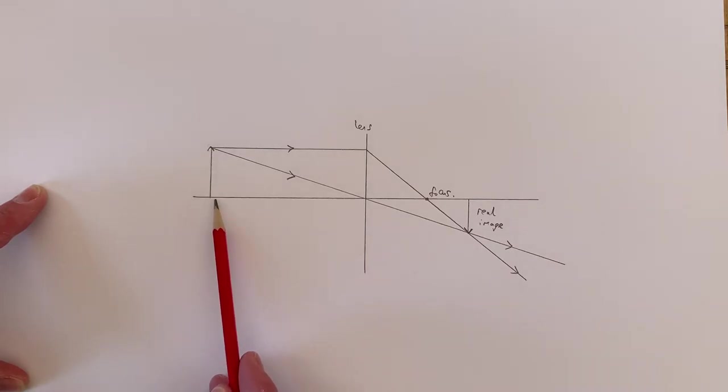If I was to bring the object closer to the lens, this object would get bigger and bigger and would eventually be bigger than the original object. However, if I move the object up to the focus point, at that point, the real image vanishes and something different starts to happen.